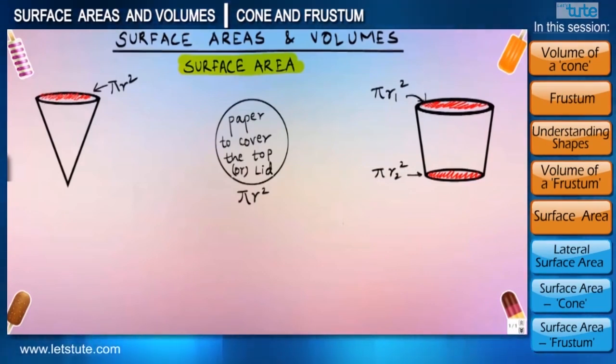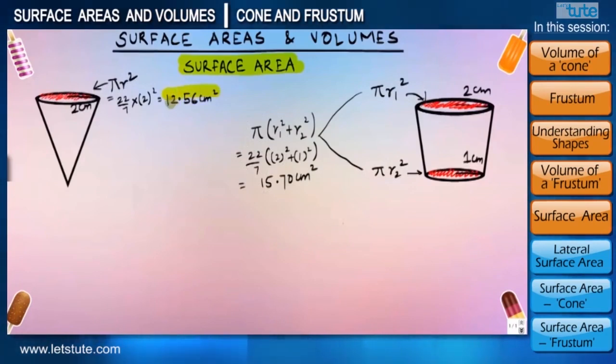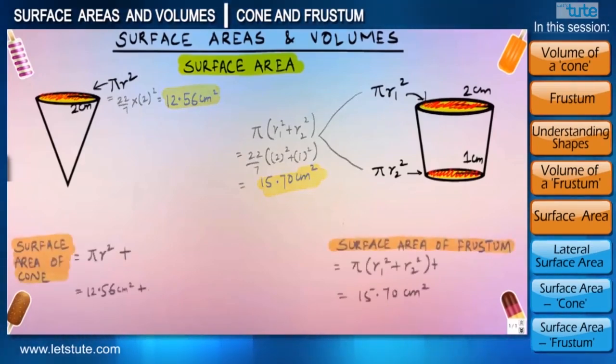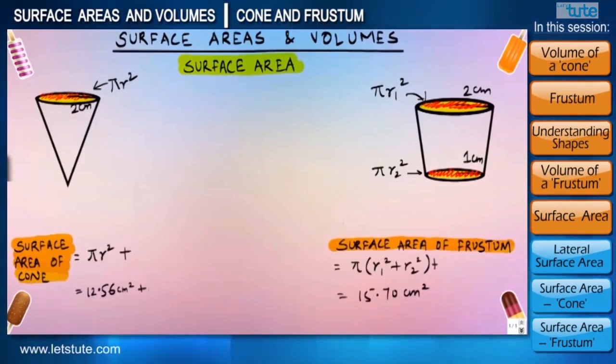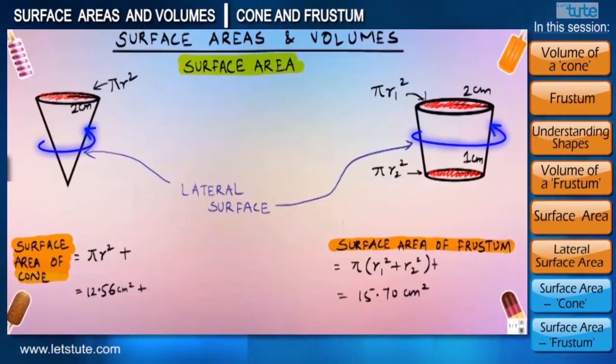And company has already given us information about the radius of the circular surfaces, so we will just substitute those information in these formulas and we'll get the area of the circular surfaces for both the shapes, which is 12.56 centimeter square for the lid of the cone. And if we talk about the cup, then it is 15.7 centimeter square of paper for both lid of the cup and the bottom circular surface. Now the only thing left to find is the paper required to cover the side part of these shapes, which is called lateral surfaces.